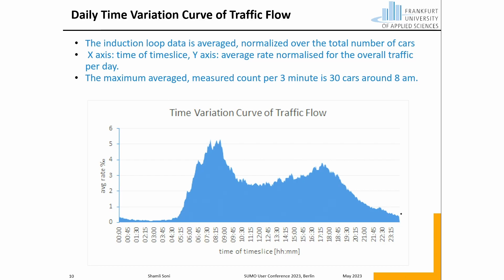The next step was to decide at what time range the emergency vehicle should be studied. We referred to the induction loop data where the distribution of traffic flow over 24 hours is shown in the chart, where the X-axis represents time slices per three minutes and the Y-axis represents the average rate normalized for overall traffic per day. The maximum averaged measure count per three minutes is 30 cars, identified around 8 AM. The peak hours are in the morning, and that is the time range selected for studying the emergency vehicle prioritization approach.